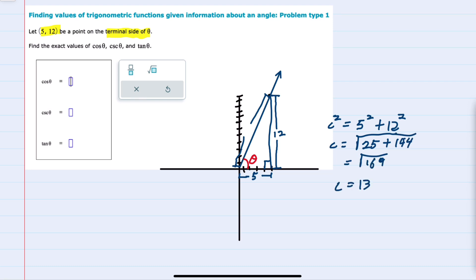Now from here for the right triangle, we can use our mnemonic SOHCAHTOA to first find the sine of theta as being the opposite over the hypotenuse. 12 is the opposite, 13 is the hypotenuse, so 12 over 13.